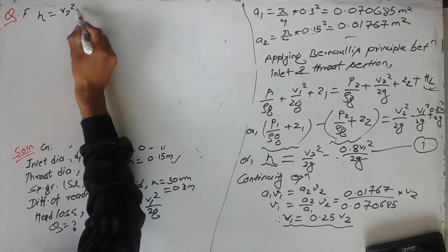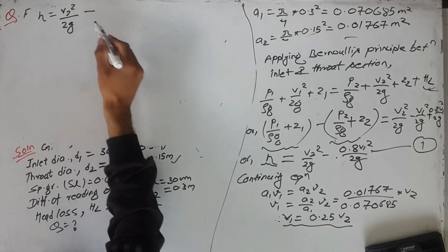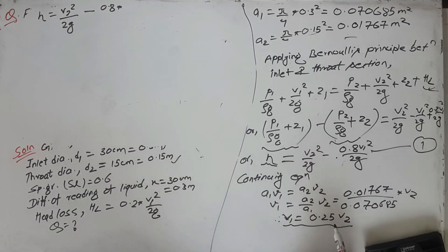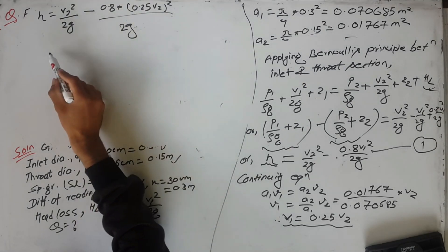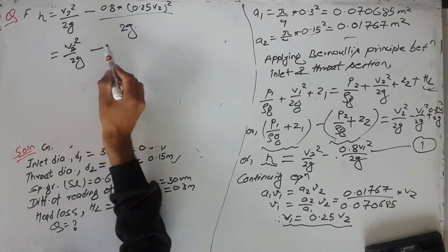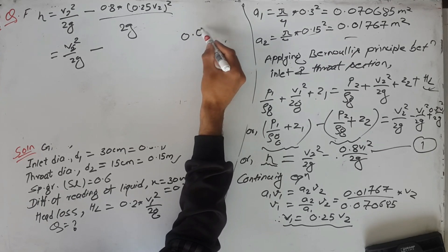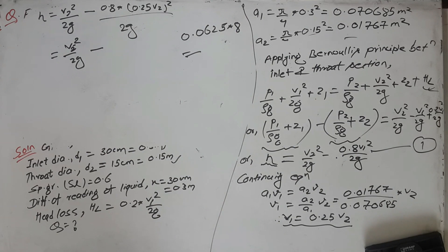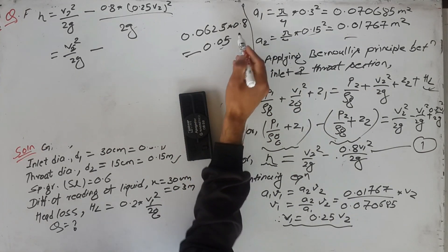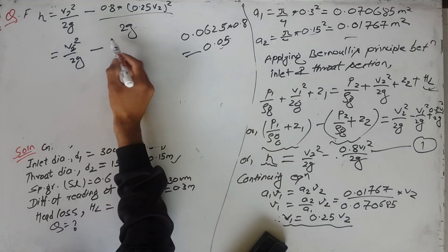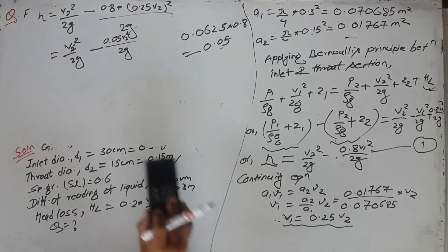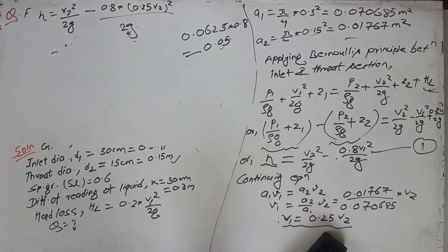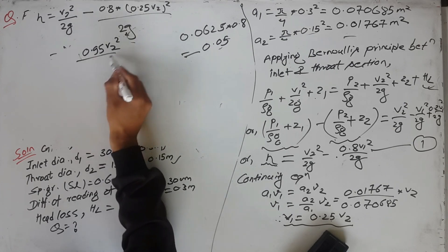H equals V2 squared upon 2g minus 0.8 into (0.25 V2) squared upon 2g. The square of 0.25 is 0.0625, and 0.8 times 0.0625 equals 0.05. So H equals V2 squared upon 2g minus 0.05 V2 squared upon 2g, which simplifies to H equals (1 minus 0.05) V2 squared upon 2g, giving H equals 0.95 V2 squared upon 2g.